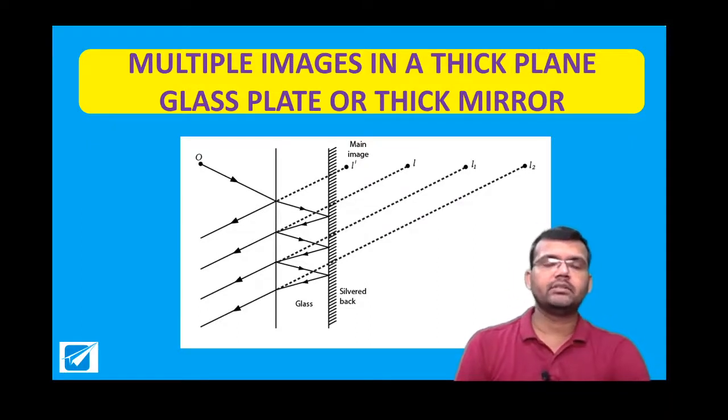In the previous video, we have seen multiple images from a thick plain glass slab, but if you paint the other side of a glass slab with a silver color, then what we get is a mirror.